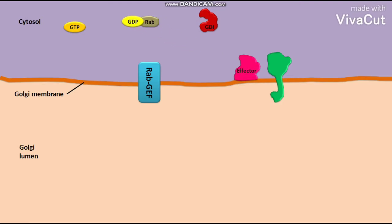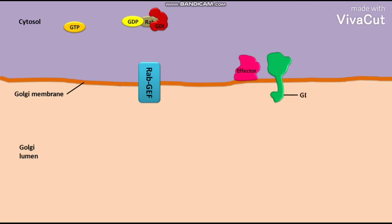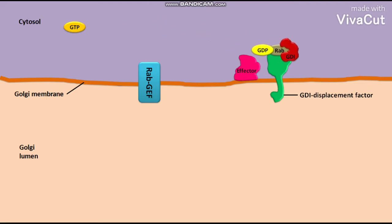The cytosolic GDI then binds to the inactive GDP-modified Rab complex. The GDI keeps the inactive GDP-modified Rab complex in the Rab-GDP state. The membrane has a nonspecific GDI displacement factor. The GDI-GDP-modified Rab complex then binds to this nonspecific GDI displacement factor.